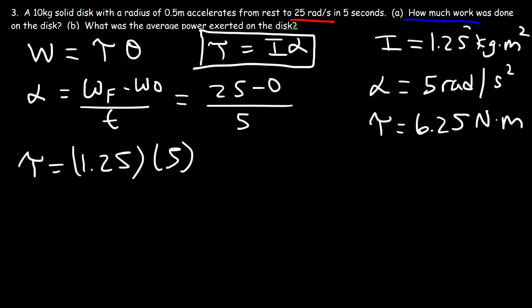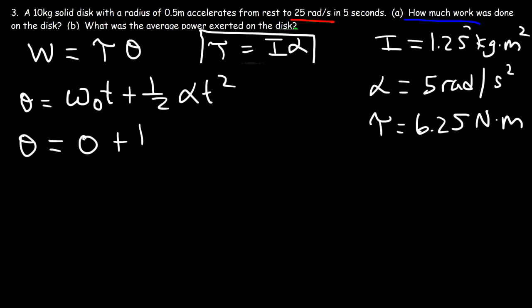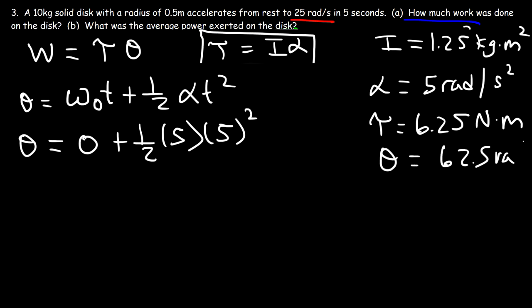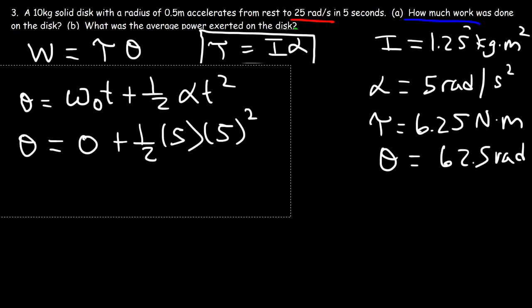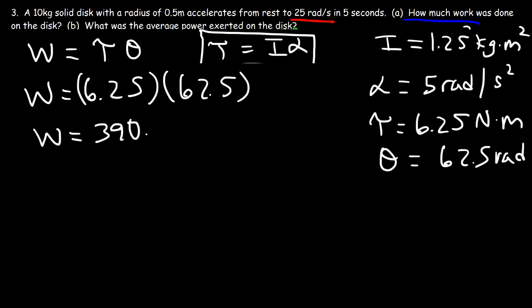Next, calculate the angular displacement using θ = ω-initial × t + (1/2) × alpha × t². The initial angular speed is 0, alpha is 5, and t is 5. So it's (1/2) × 5 × 25 = 62.5 radians. The work done is torque times angular displacement: 6.25 times 62.5 equals 390.625 joules — the same answer we got earlier.